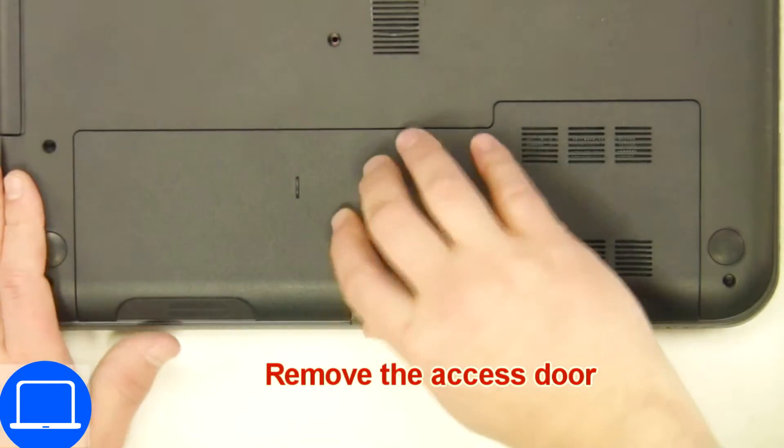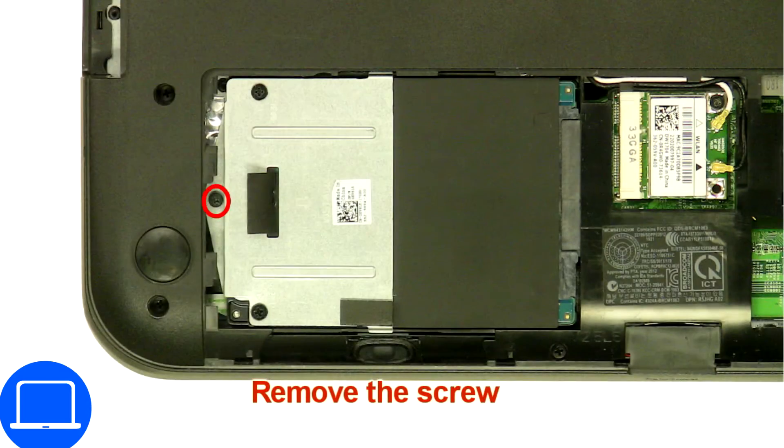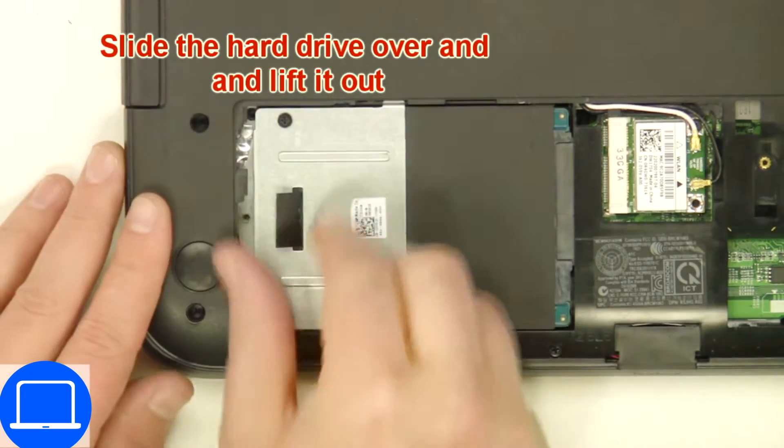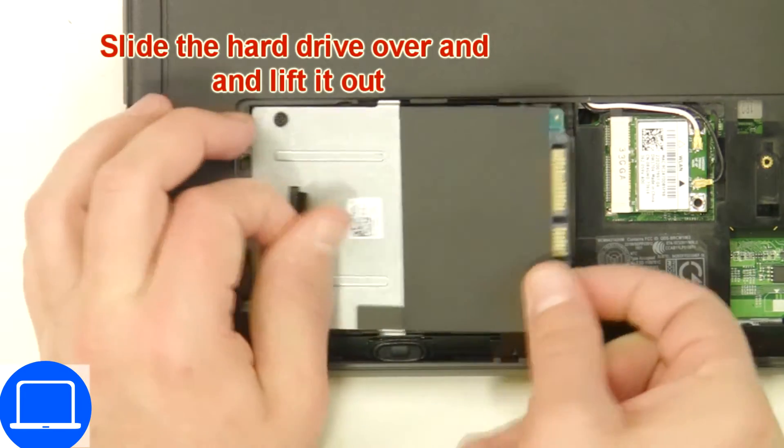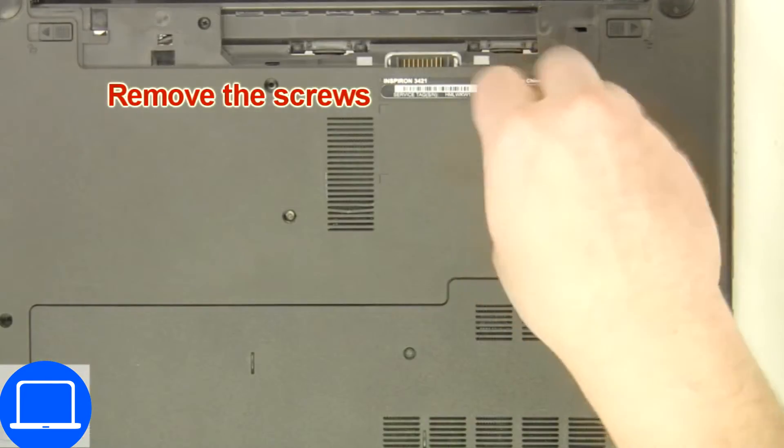Unscrew then remove access door. Now unscrew and remove caddy. Now unscrew bottom base.